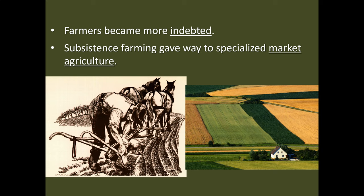It also changes how we farm. In the days past, your independent farmer had grown food for his own survival. Now we're moving on to what we call market agriculture, where you specialize in a crop or two and you focus just on that. You sell the crop for a profit, and you use that profit to purchase the goods that you need. So it's less independence and more just a business.